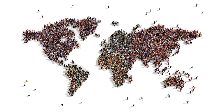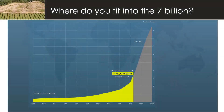Humans do two things very well: we reproduce very well, and we improve our condition. I think we're always driven to improve the human condition, and that has implications. Where do you fit into this 7 billion? The world's population at the moment is about 7.8 billion — we don't know exactly how precise or accurate that measurement is, but from global census data and demographic models we're probably at about 7.8.